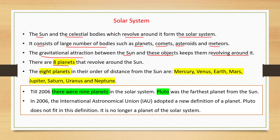There are 8 planets that revolve around the sun. The 8 planets in their order of distance from the sun are: Mercury, Venus, Earth, Mars, Jupiter, Saturn, Uranus, and Neptune.